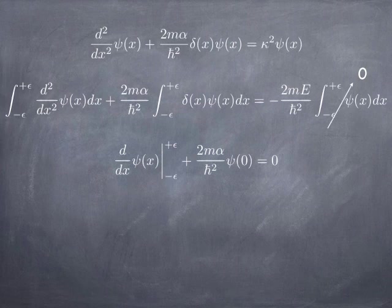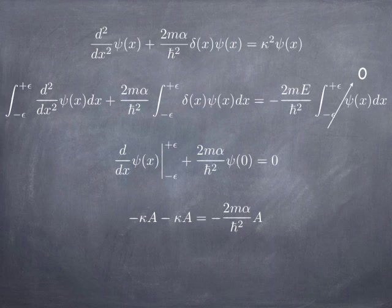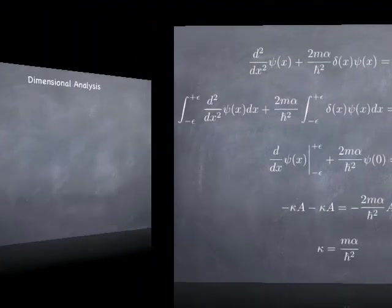So, looking at what happens, we get the first derivative evaluated at plus and minus epsilon, plus 2m alpha over h bar squared times the value of the wave function at the origin, which is what we get from the delta function integrated, is equal to zero. So the slope has a kink in it, and the kink happens between plus and minus epsilon. And putting in our solutions just to the right and just to the left of the origin, the e to the minus kappa x and e to the plus kappa x, what we get is that minus 2 kappa a is minus 2m alpha over h bar squared times a, and so the 2's cancel, and the a's cancel, and what you get is a condition on kappa. Now, remember that kappa was related to the energy, so if we know kappa, we know the energy, so now we know the energy of the bound state.